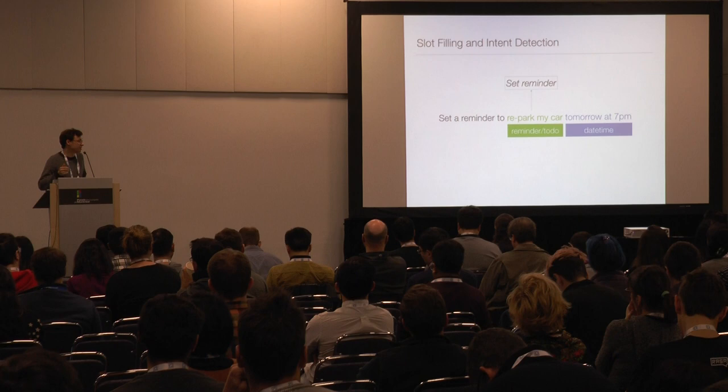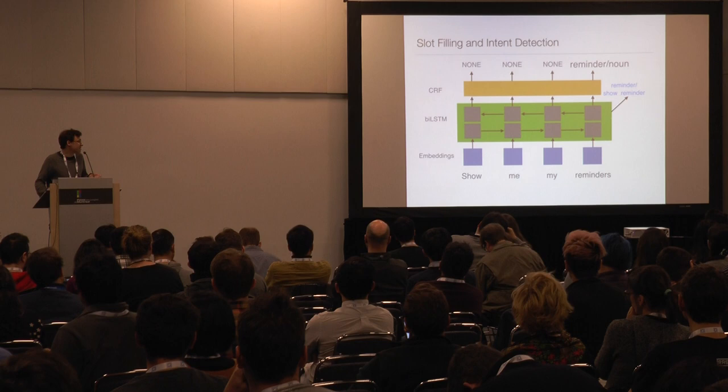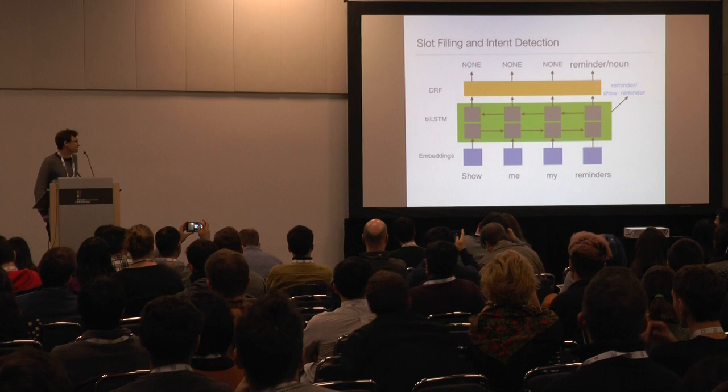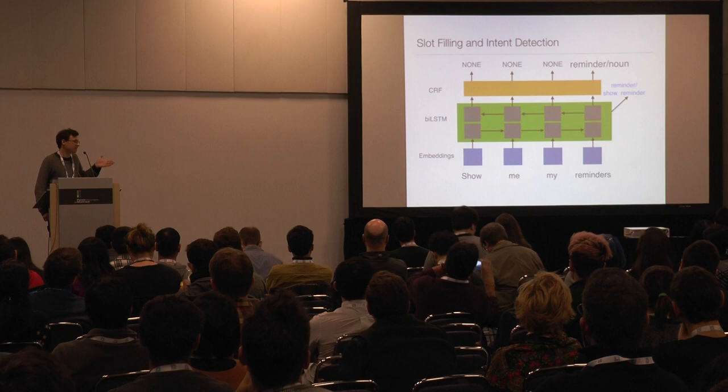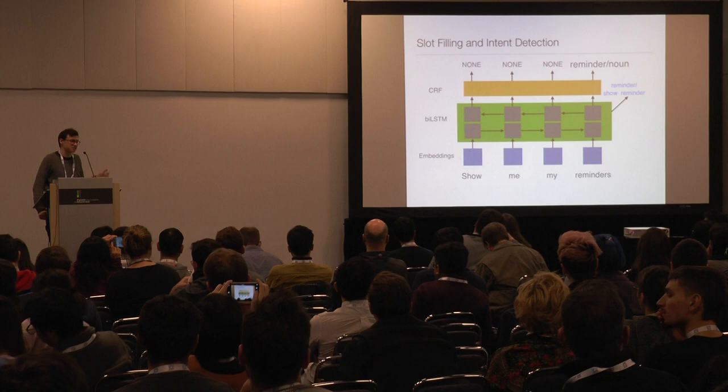The task of actually filling the slots is a sequence labeling task. Ideally, some model would figure out that 'repark my car' is the to-do, and 'tomorrow at 7 p.m.' is the date-time. One class of models that has been really successful for this kind of task are BiLSTM-CRF models, where you first embed the tokens, run them through a BiLSTM, use that BiLSTM layer to predict the intent, and then pass the output through a CRF layer to assign tags to each word corresponding to the slots.